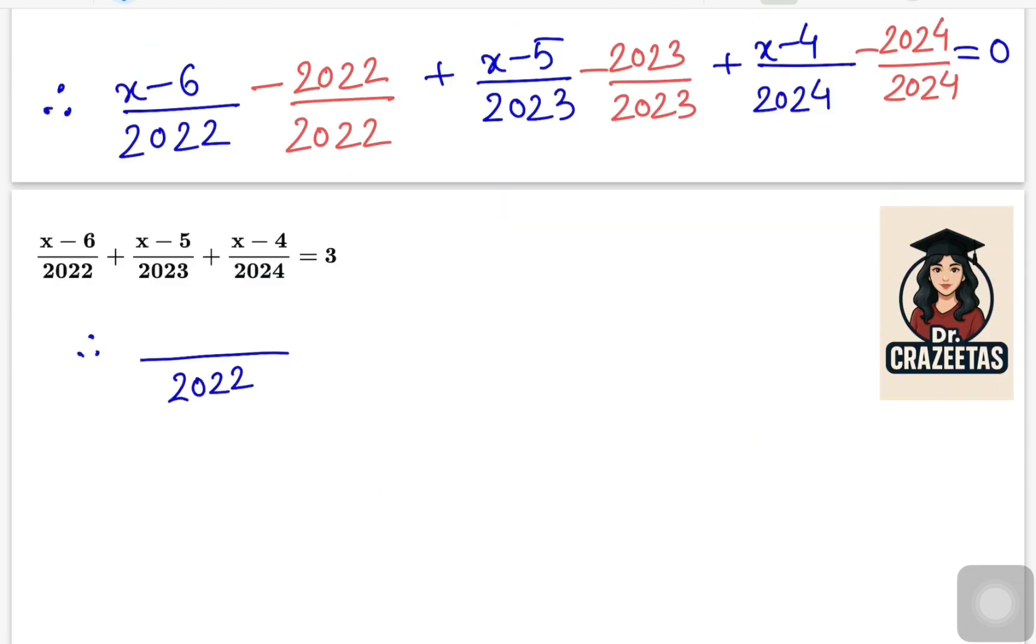So we are writing 2022 once only and trying to solve the constants there, which is minus 6 and minus 2022. Both are negative, so there is negative sign but we are going to add those numbers. So their addition will be 2028. Same we are going to do for the next two fractions.